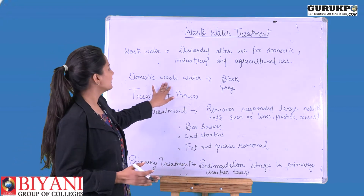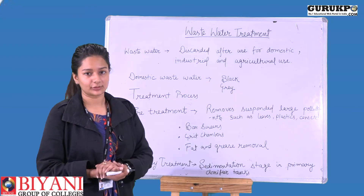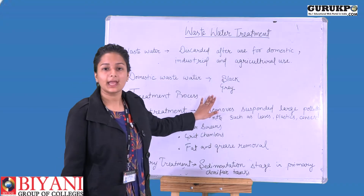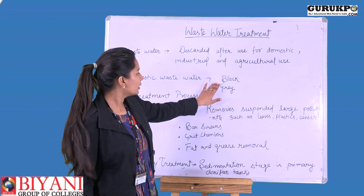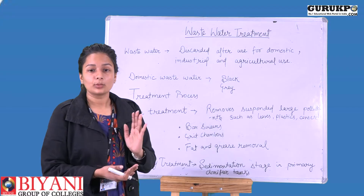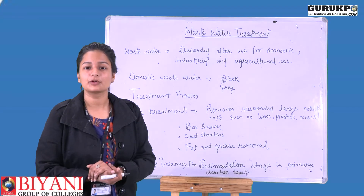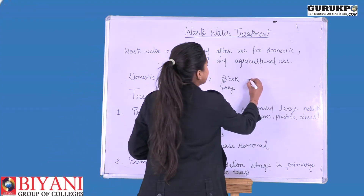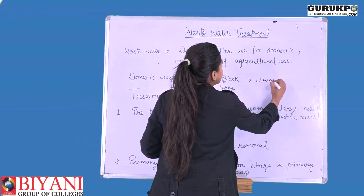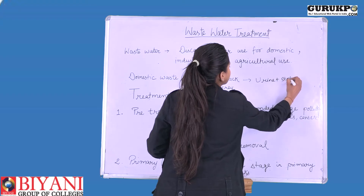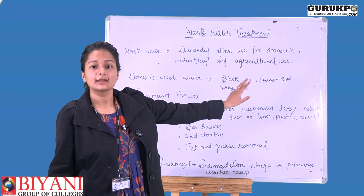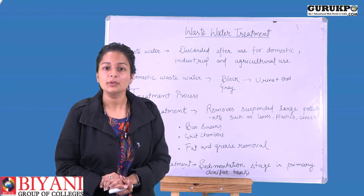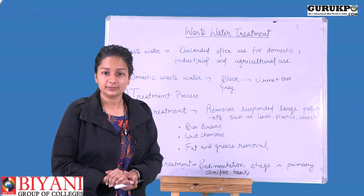On the basis of domestic wastewater, we have two types — we give them a colour coding: black water and grey water. Black water is water from toilets — water discharged from toilets and bathrooms which contains urine and stools, i.e., fecal matter. Grey water is water discharged from kitchens or wash basins.